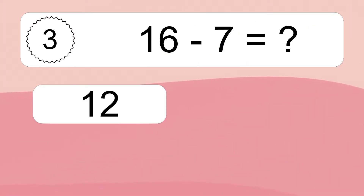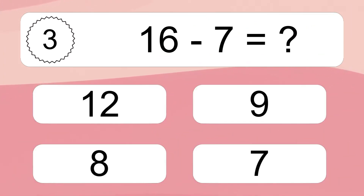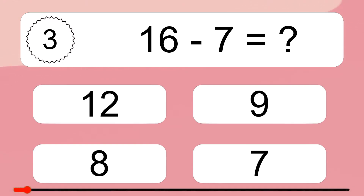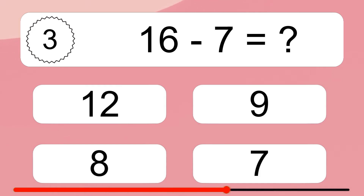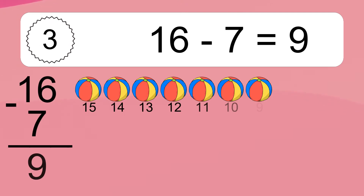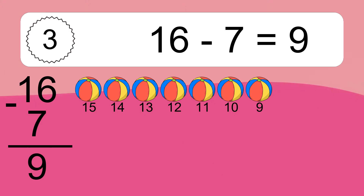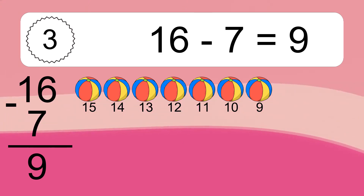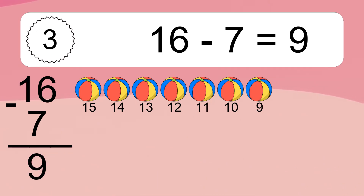16 minus 7 equals what? 16 minus 7 equals 9. Let's count it. 15, 14, 13, 12, 11, 10, 9.